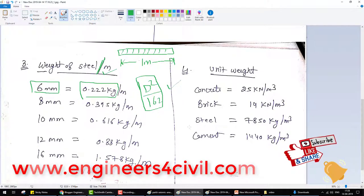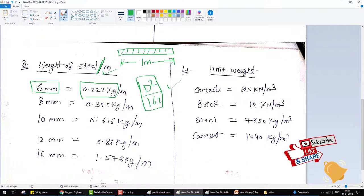And how is this formula created? Assume if you want to calculate the weight of any material, you need volume multiplied by density equals the weight of the material. The volume of the bar is pi by 4 times d squared.